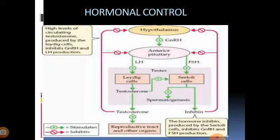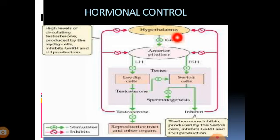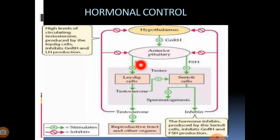What is the hormonal role? How does hormone play a role in spermatogenesis? Before going into detail we must learn about this. Hypothalamus - you all know hypothalamus is the master of master glands. This hypothalamus is releasing GnRH, which is gonadotrophin releasing hormone. This gonadotrophin releasing hormone induces the anterior pituitary, which is nothing but adenohypophysis. This anterior pituitary produces LH, that is luteinizing hormone, and FSH, which is follicular stimulating hormone.